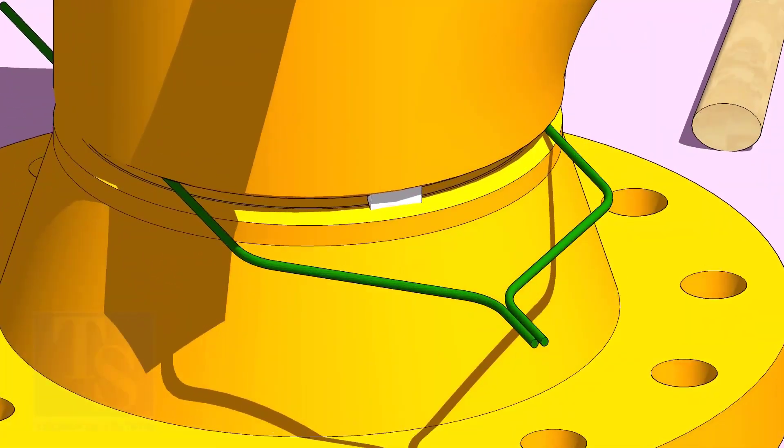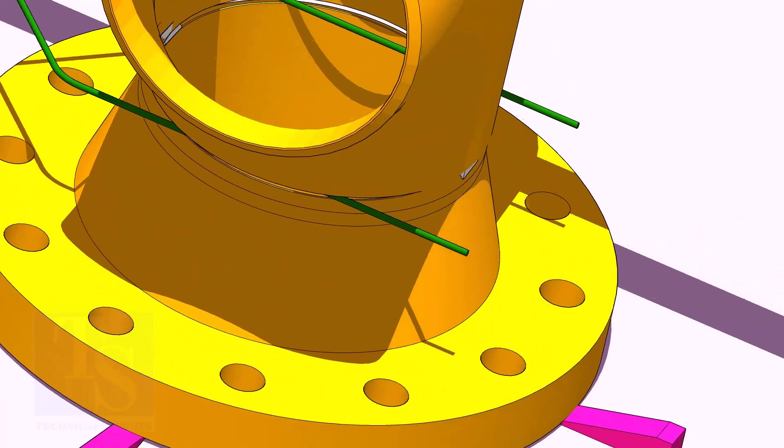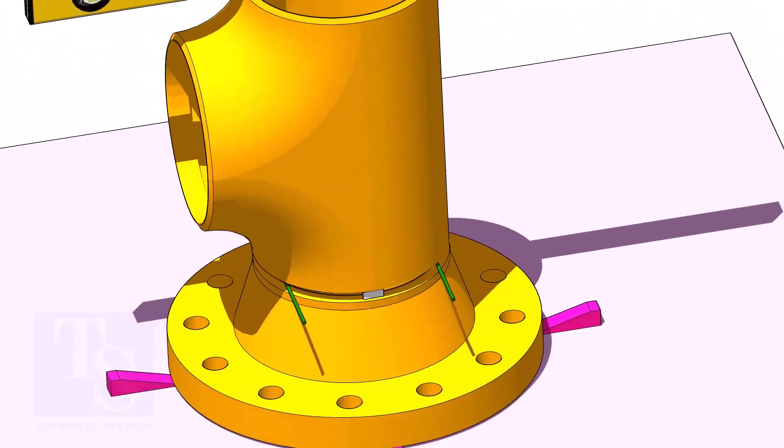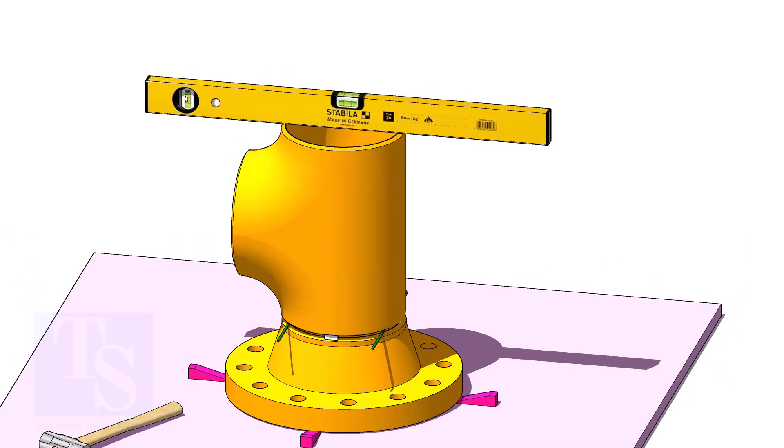Check the top level and tack weld. The sequence of the tack welding shall be 0 to 180 degrees and 90 to 270 degrees.